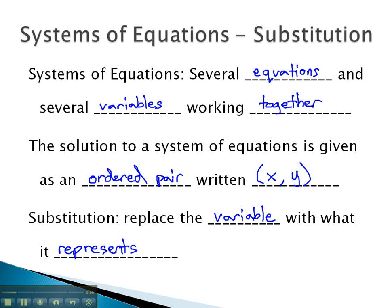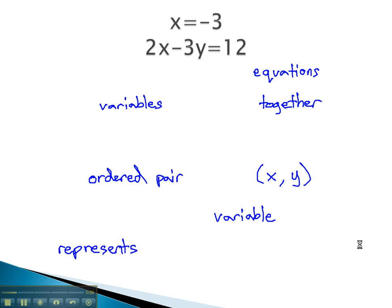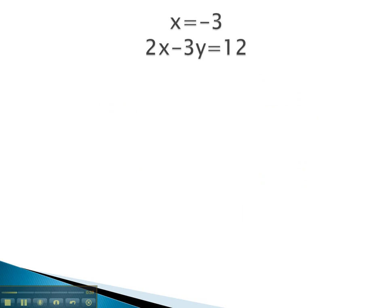We really have seen this before. In a problem like this, we see that x is equal to negative 3. This means in the other equation, the x is still equal to negative 3, and we can replace that x with negative 3. So we have 2 times negative 3 minus 3y equals 12.